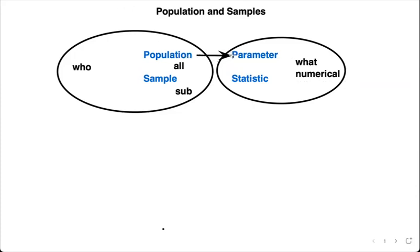The nice thing about this is for a population we're going to get a parameter; for a sample we're going to get a statistic. So again, who is the population? From the population we'll get what? A parameter, a numerical value. Who would be the sample? A subgroup. And from that sample we will get what? The numerical value, the statistic.